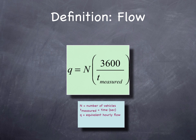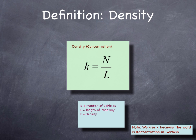Q is the number of vehicles, n, times 3600 over t sub measured, which is the measured travel time in seconds. We want to measure the density, which we represent with the letter k, which is the number of vehicles per unit length. We might measure density in vehicles per kilometer, speed in kilometers per hour, and flow in vehicles per hour.